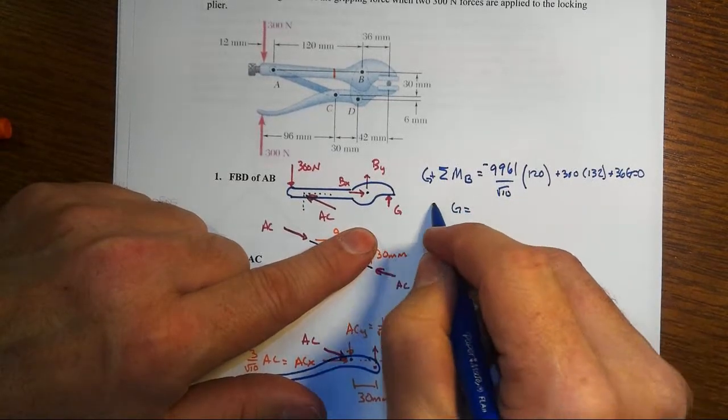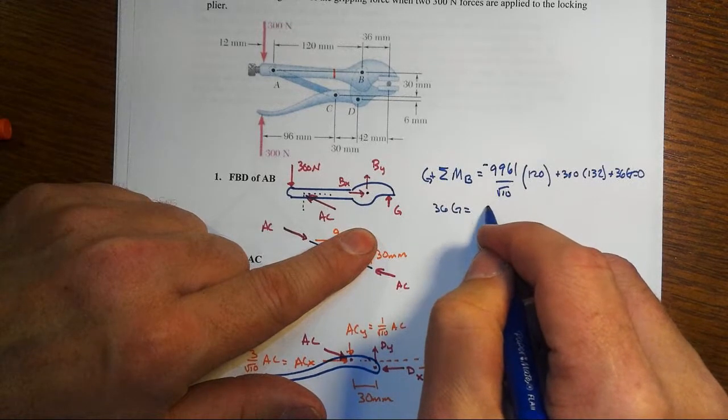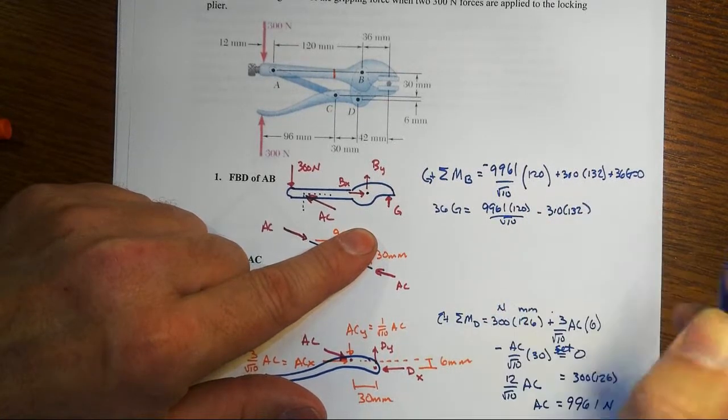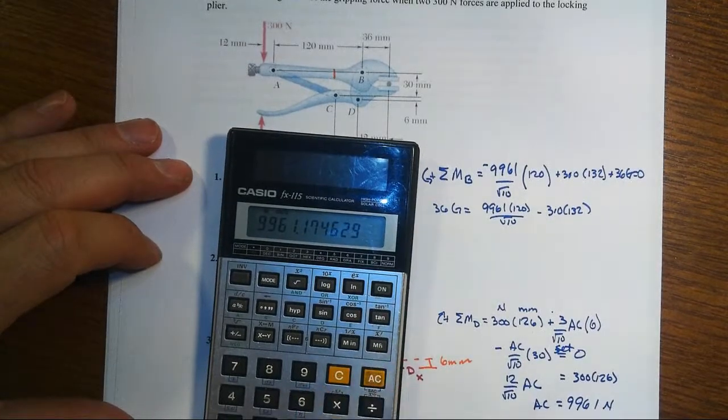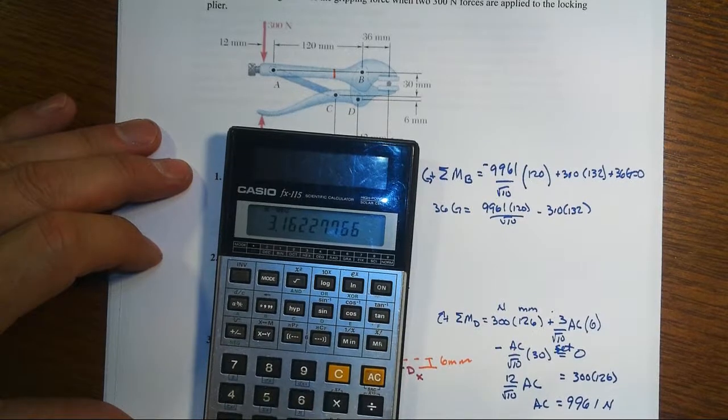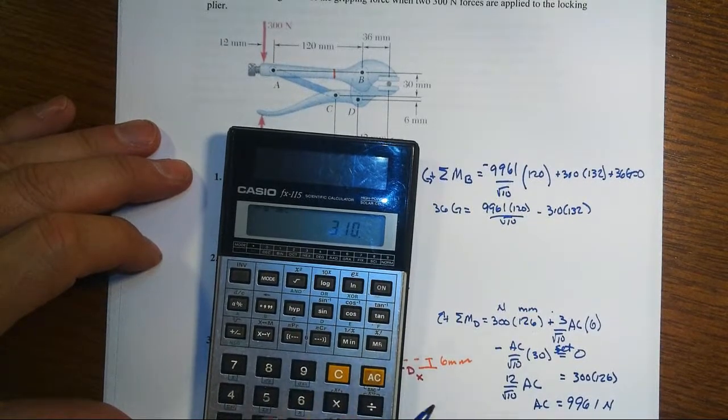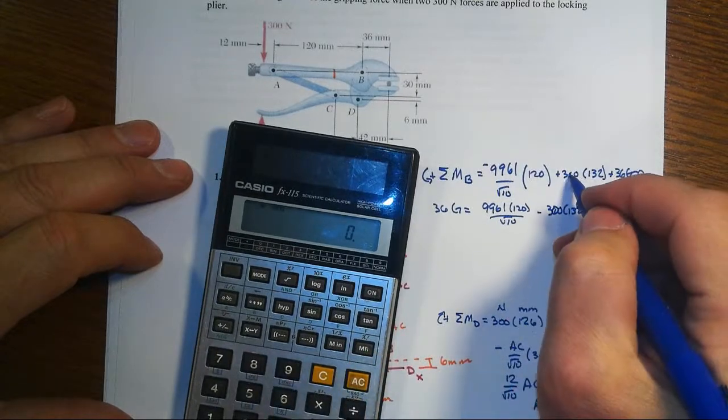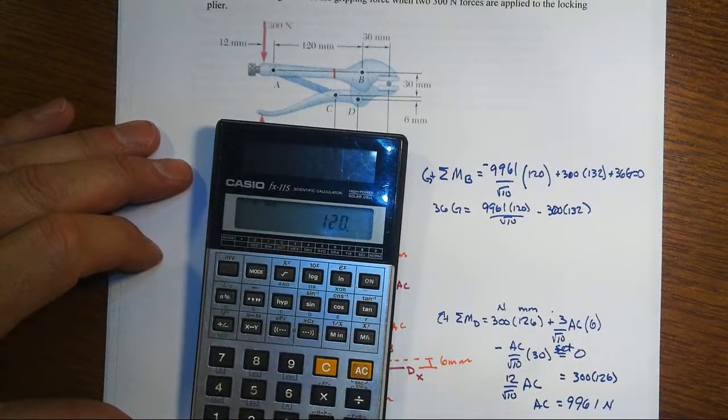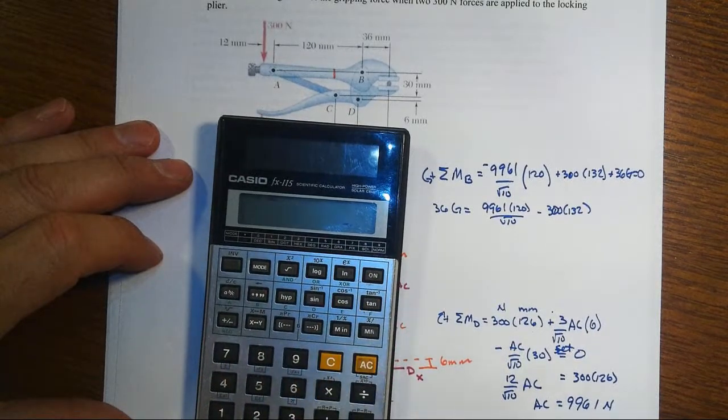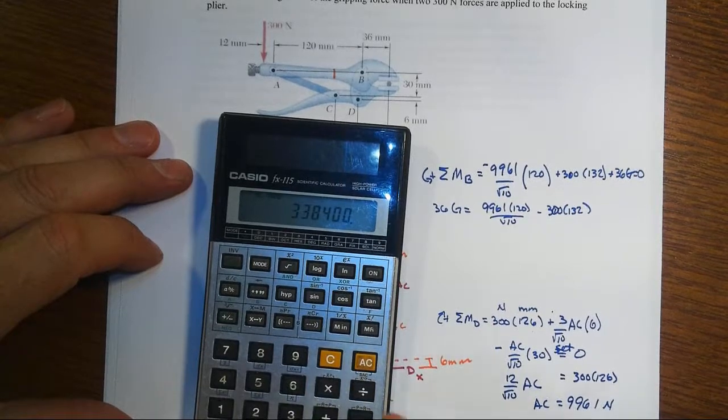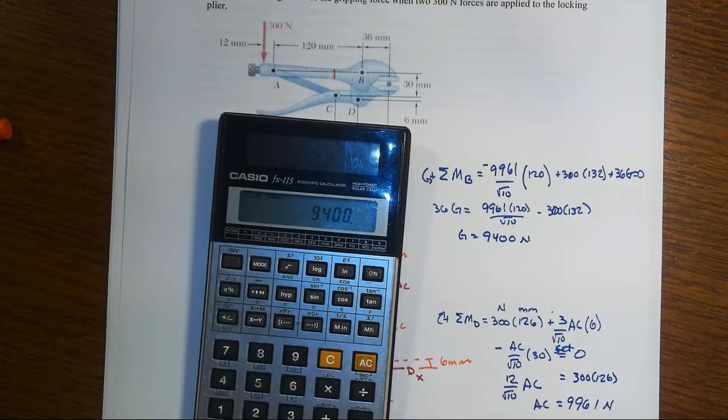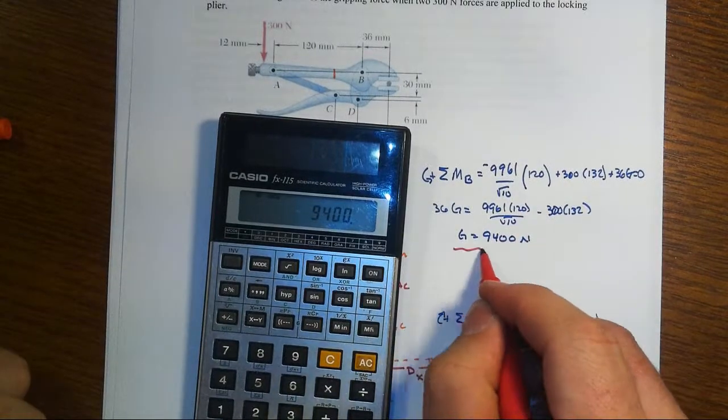So G will be equal to, well, 36G will be equal to 99.61 times 120 over root 10 minus 300 times 132. Now if we get a negative value here, we know we've made a mistake. I messed up because that's 300 not 310. Alright, so let's do that again. And then divide by 36 and we get a grip force of 9400 newtons. And it was a positive value. That told us that we did everything else correct. And there's your answer.